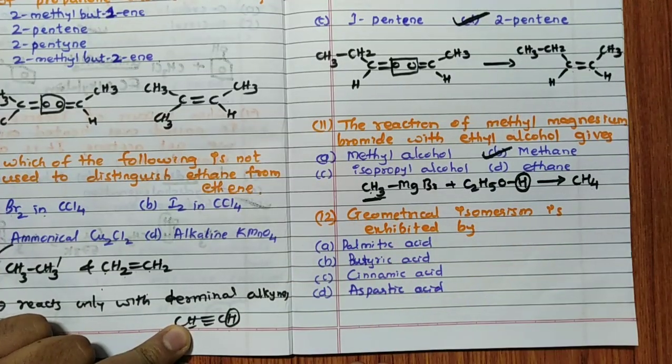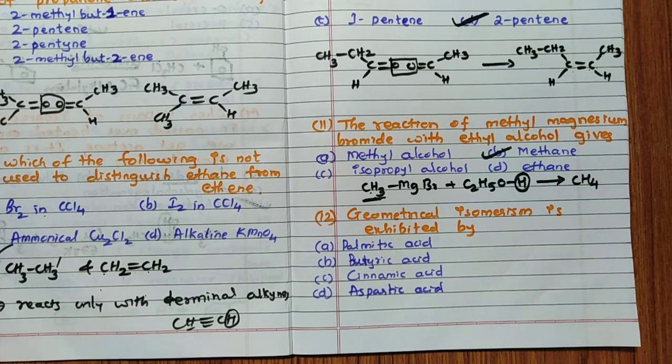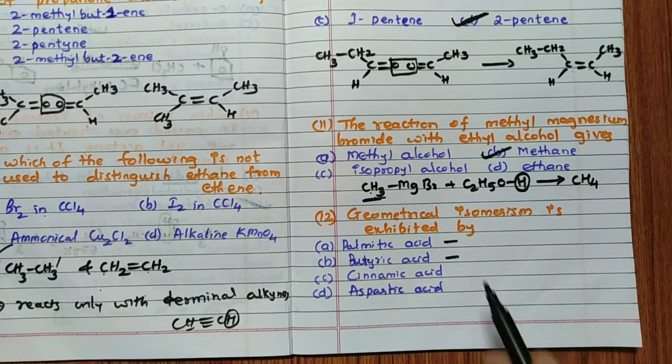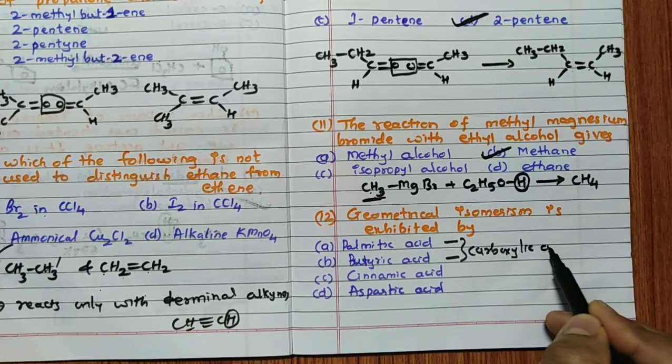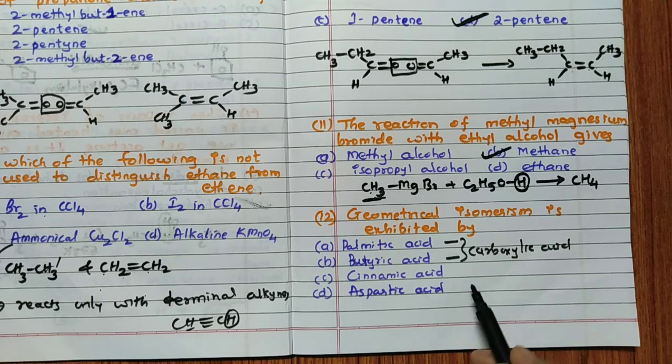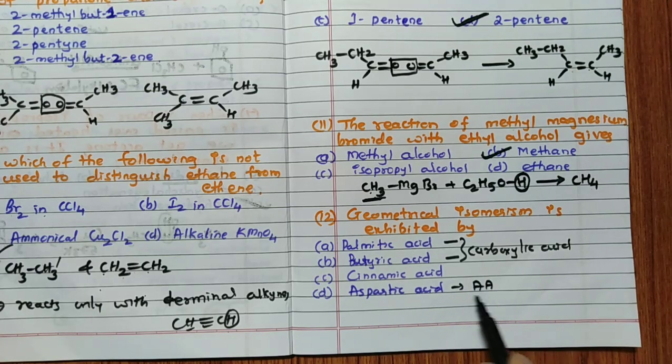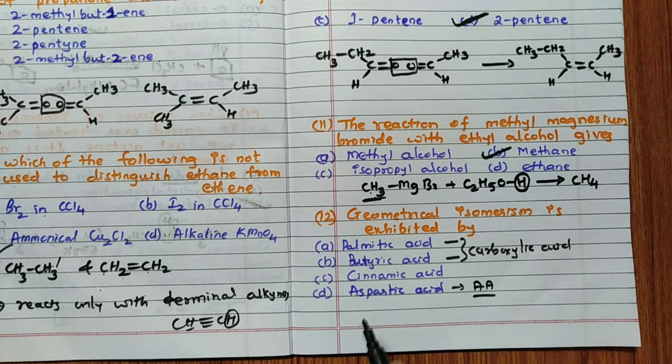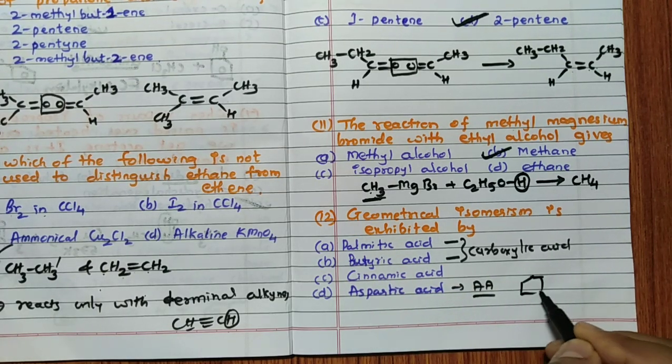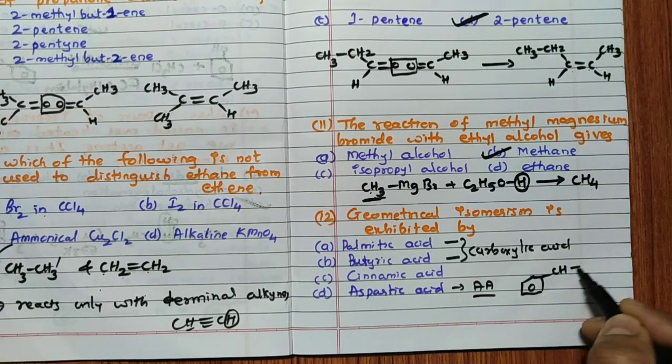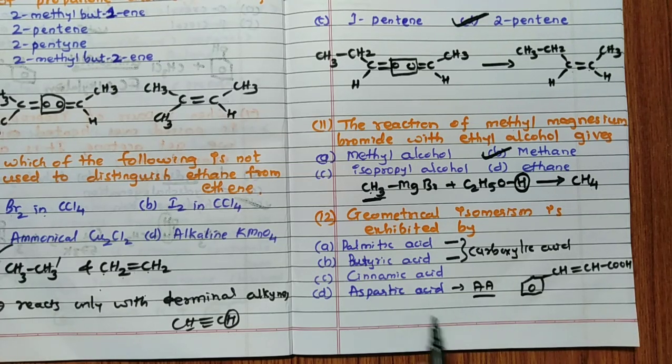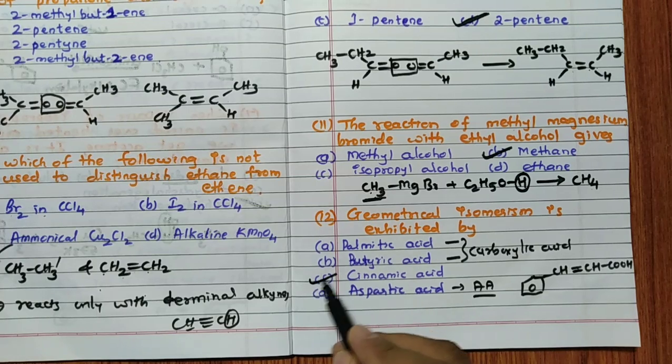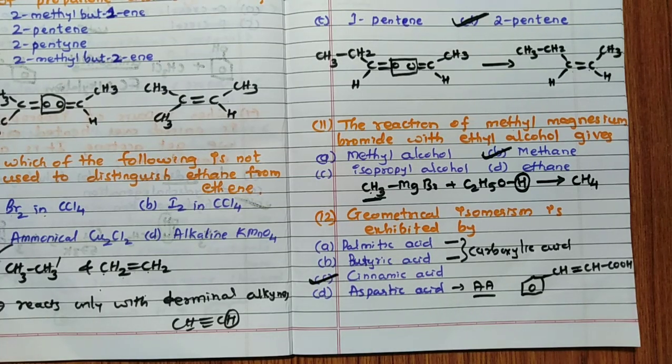The twelfth one. Geometrical isomerism is exhibited by - so palmitic acid, butyric acid, these two are carboxylic acid. Remember carboxylic acid, so there is no double bond is present in it. Aspartic acid is an amino acid. So in this also double bond is not present. But cinnamic acid - geometrical isomerism condition is double bond should be present. Cinnamic acid is like this. Remember cinnamic acid structure is like this, CH double bond CH-COOH is the structure. So cinnamic acid, remember, there is a double bond. Hence this can show geometrical isomerism.